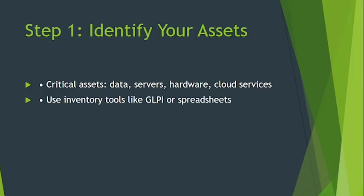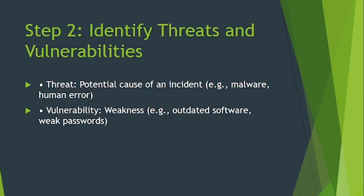The second step is to identify threats and vulnerabilities. A threat is any potential cause of an unwanted incident — for example, malware, ransomware, or human error. A vulnerability is a weakness in your system, such as outdated software or weak passwords.